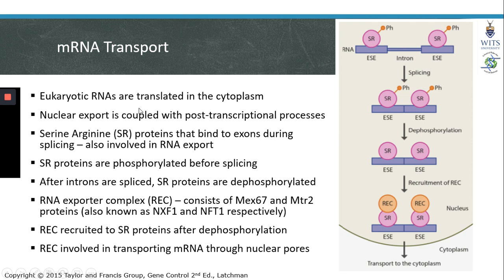Eukaryotic RNAs are translated into proteins in the cytoplasm; therefore, an RNA must first be exported from the nucleus into the cytoplasm in order for that mRNA to be translated into a protein. Post-transcriptional processes such as splicing, 5' capping, and poly-A tailing are coupled with nuclear export of the mRNA. For example, the serine-arginine proteins that bind to exons during splicing also play a role in exporting this RNA from the nucleus.